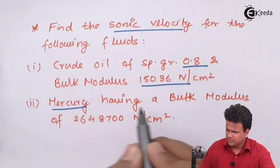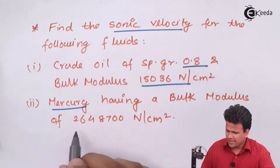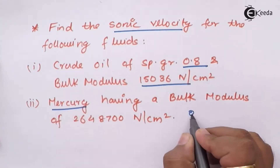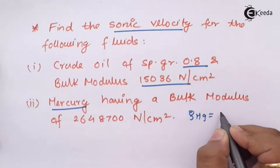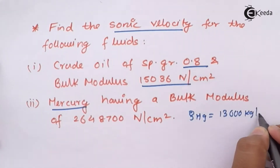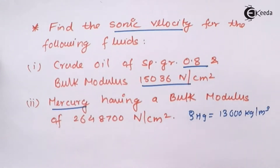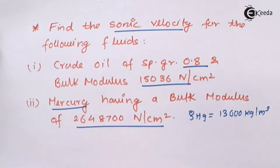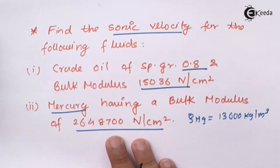and next is mercury, whose density we already know. The density of mercury is 13600 kg per meter cube. The bulk modulus given to us is 26488700 N/cm². Now let us calculate the sonic velocity with respect to bulk modulus, and let us write down the data which we know.